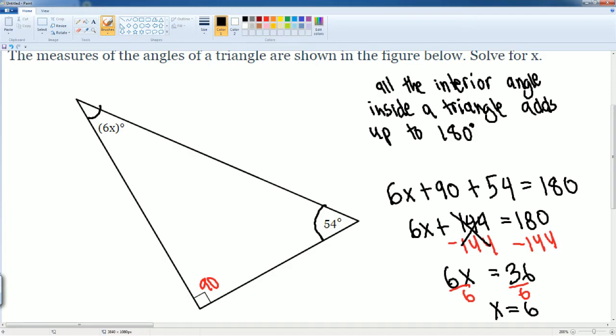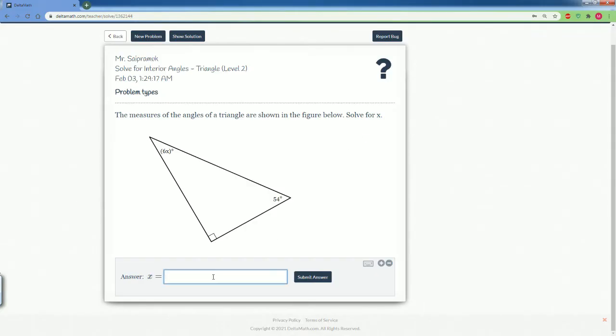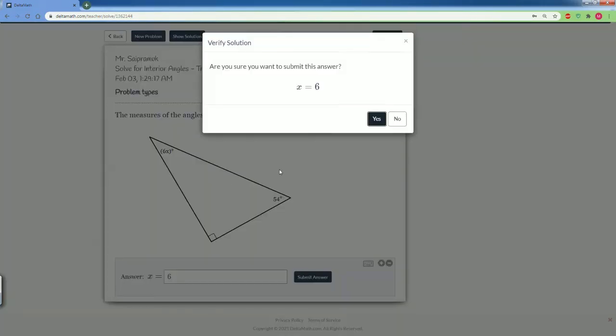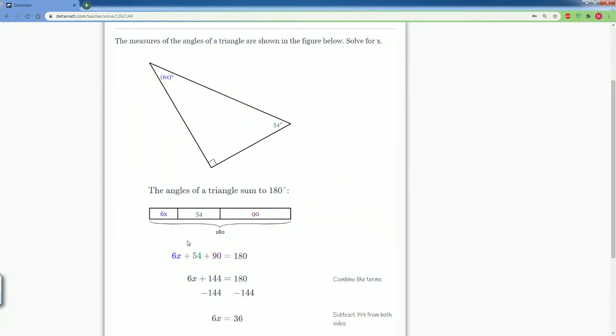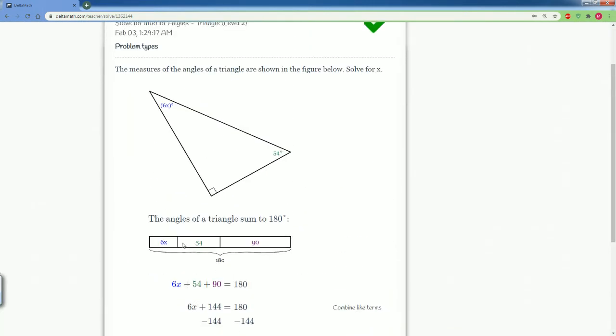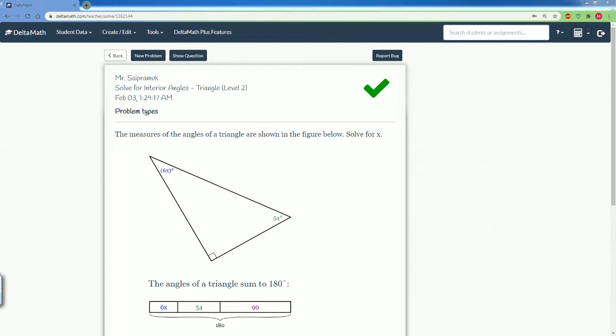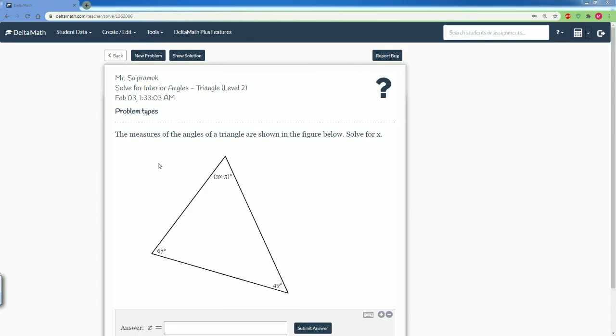All right. Let's check our work here by plugging in 6 for x. And we did it correct. Good job. Let's do another problem. Here the triangle asks the same question. The measure of the angles of a triangle are shown in this figure below. Solve for x.